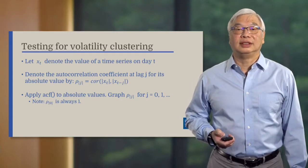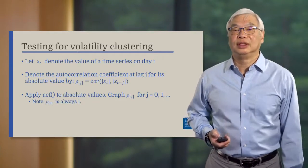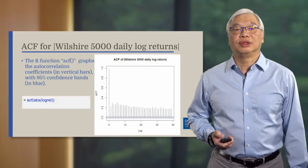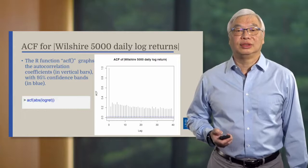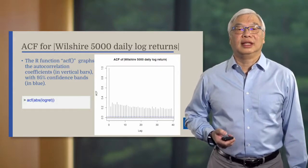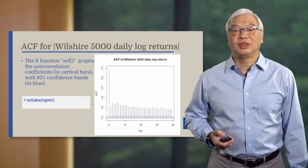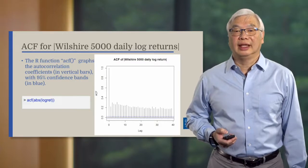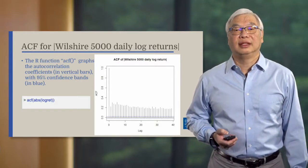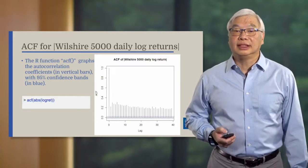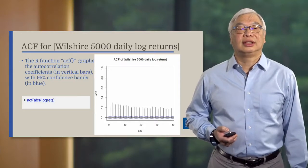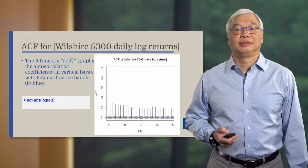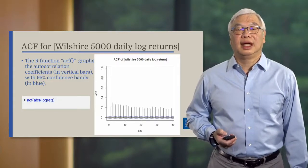Remember that the zeroth order autocorrelation coefficient is always 1. Here is the graph of the autocorrelation coefficients of the absolute values of log returns. It looks very different than the corresponding ACF graph for the log returns themselves without the absolute value. Every autocorrelation coefficient is positive and outside the 95% confidence band. This pattern of autocorrelation coefficients tells us that large returns, whether positive or negative, tend to be followed by large returns.